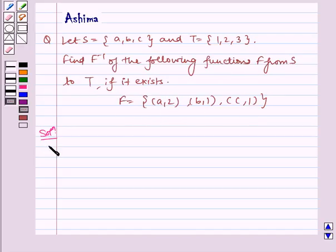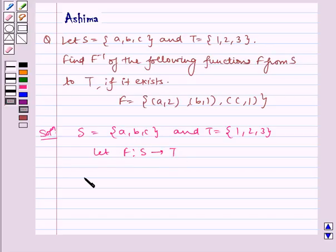Now let us write the solution. Given to us, S = {a, b, c} and T = {1, 2, 3}. Let f be a function from S to T, that is f is a function from {a, b, c} to {1, 2, 3}.